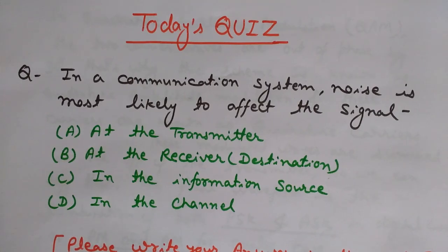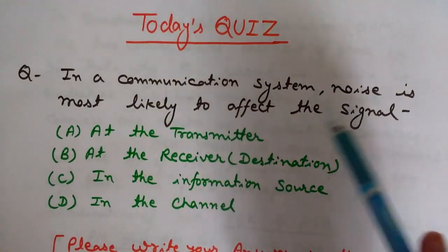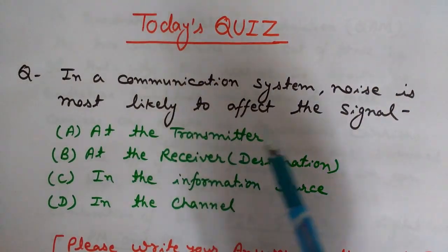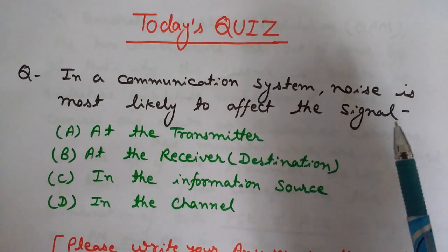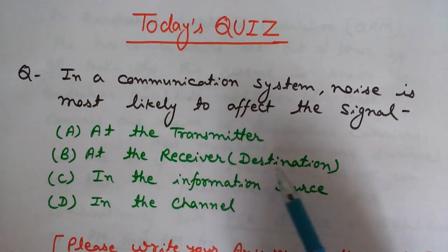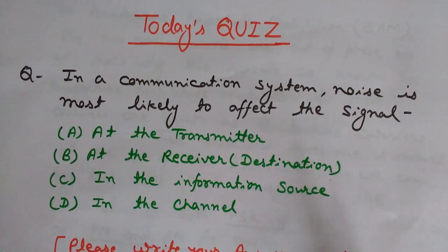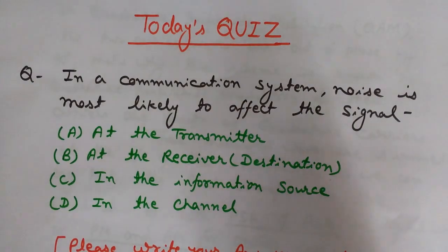But before starting this topic, let's see today's quiz. Our question is: in a communication system, noise is most likely to affect the signal at which stage? At the transmitter, at the receiving or destination end, in the information source, or in the channel? If you know the answer, please write it in the comments.